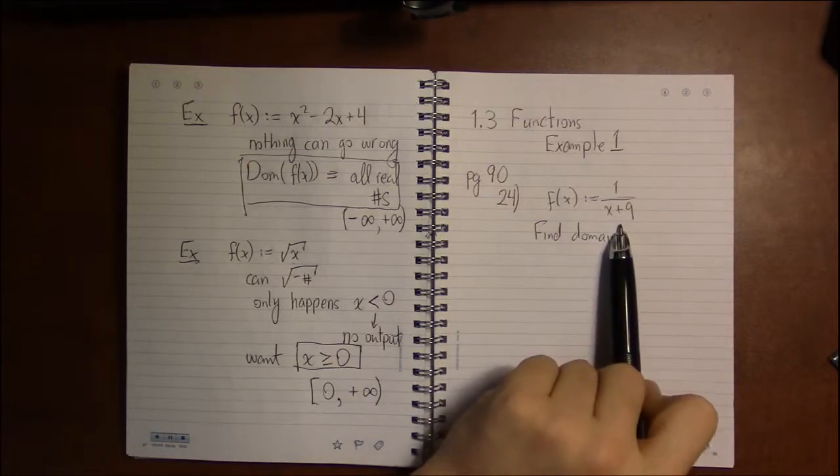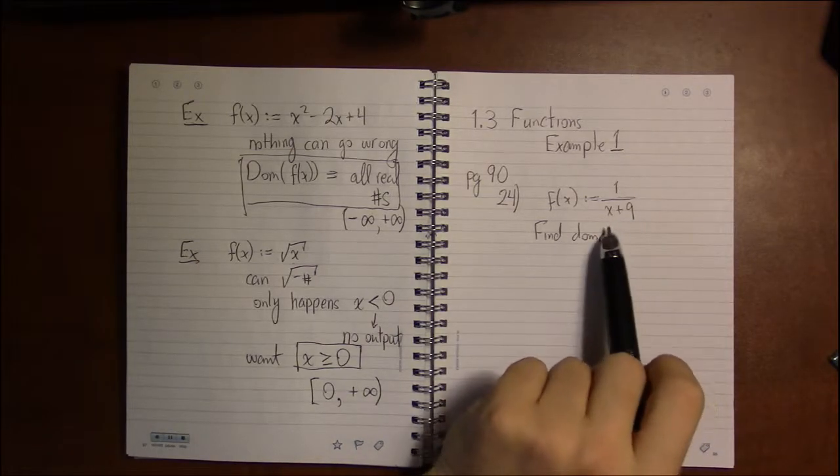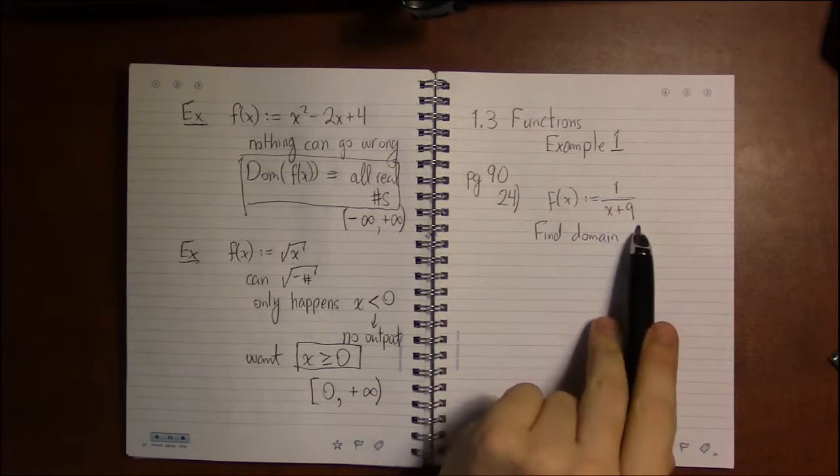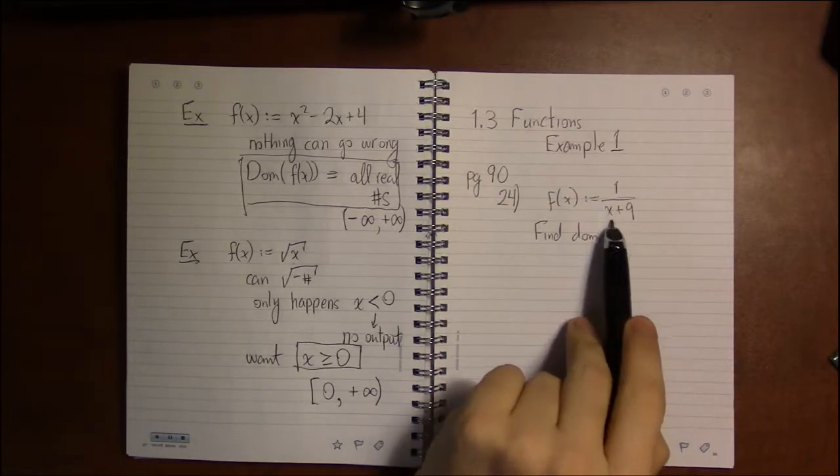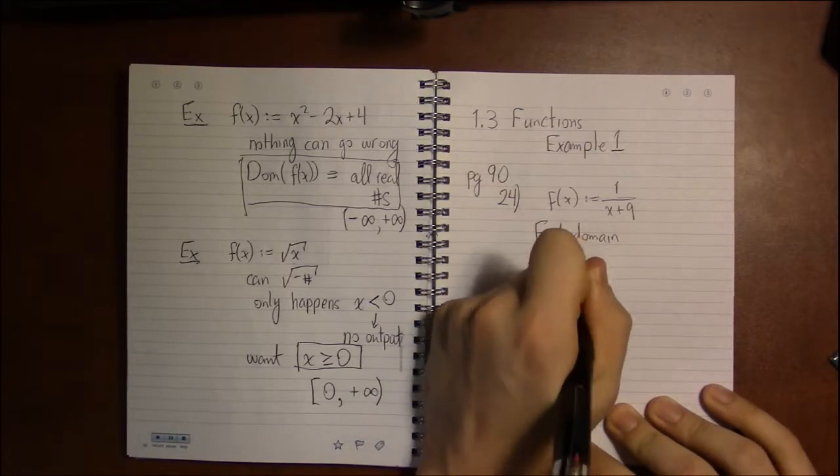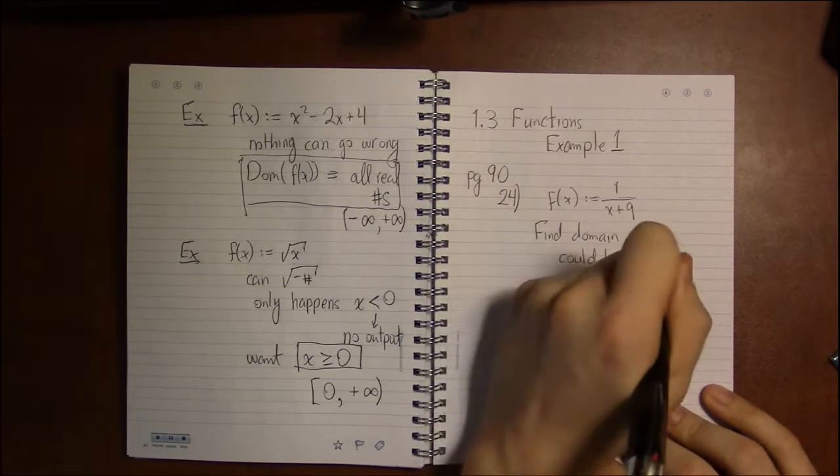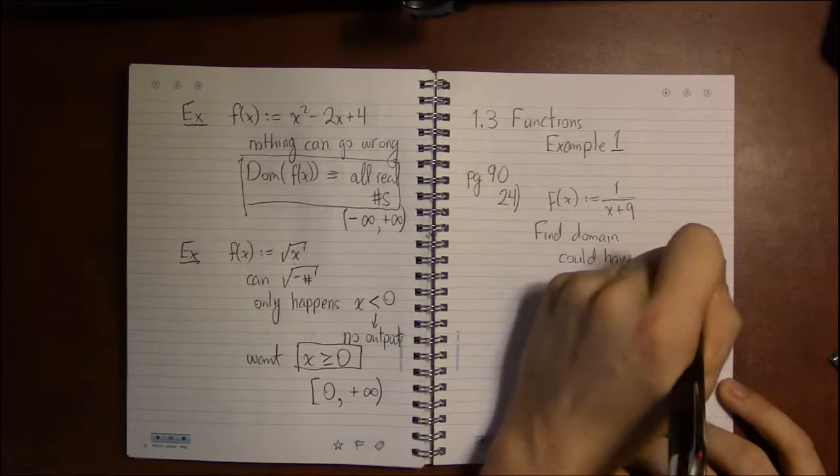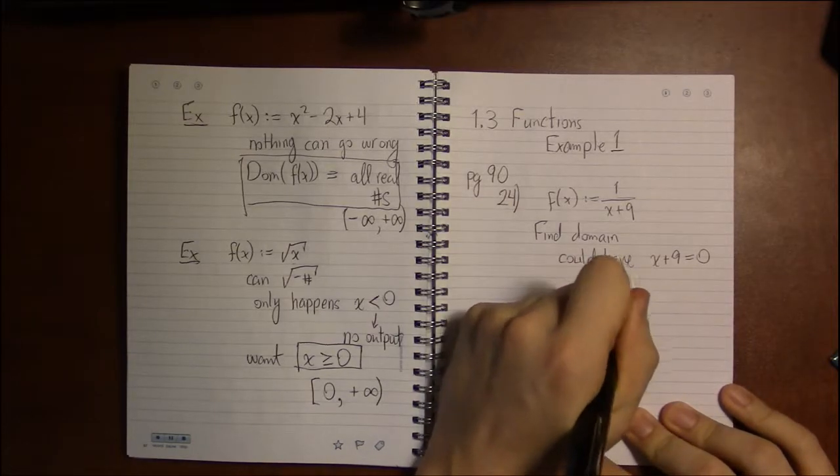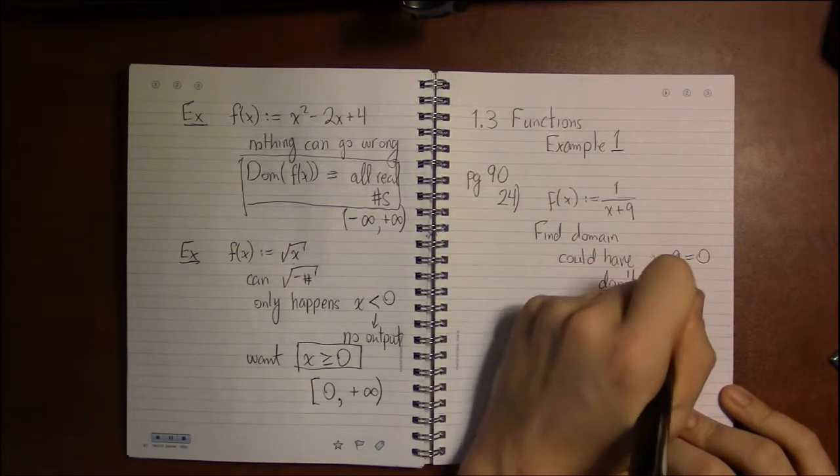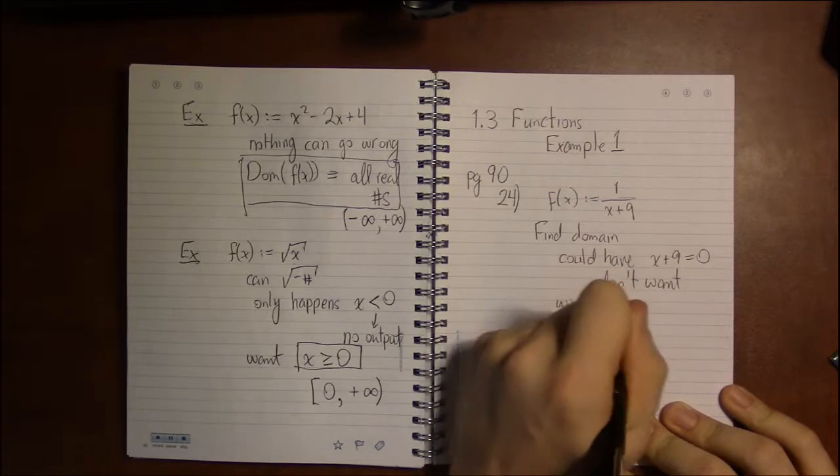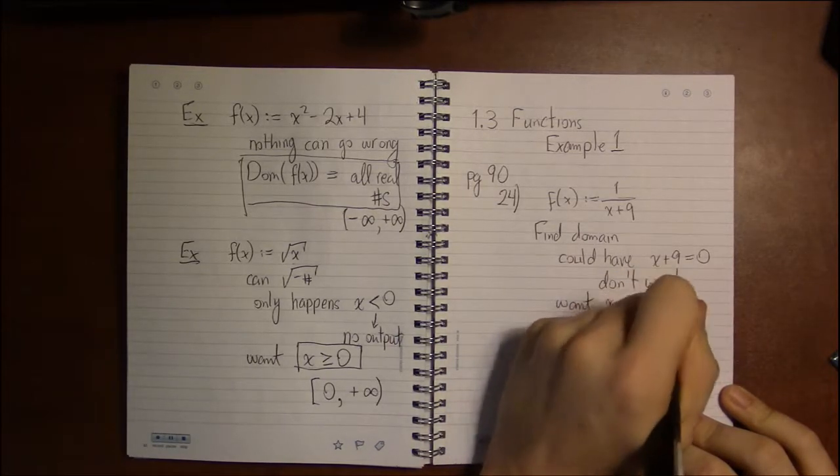Well I don't see any square roots here, so there's no way we can take a square root of a negative. But I do see a denominator here, and if that denominator can be 0 we're in trouble. So we could have a denominator x plus 9 equaling 0, which is what we don't want. We don't want x plus 9 being 0. What we do want is for x plus 9 to not be 0.